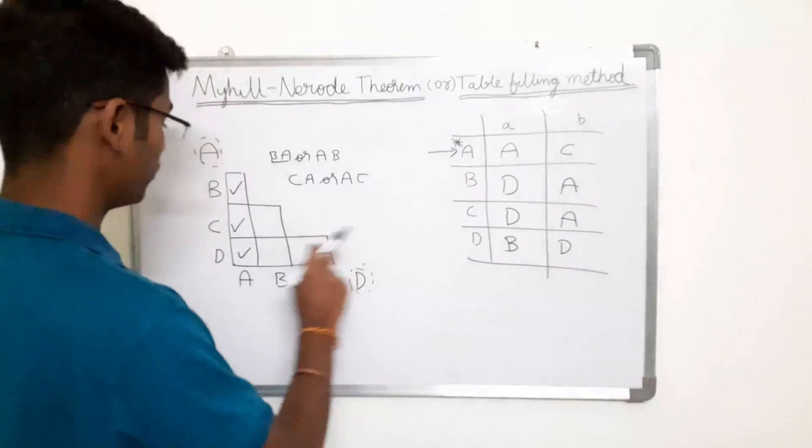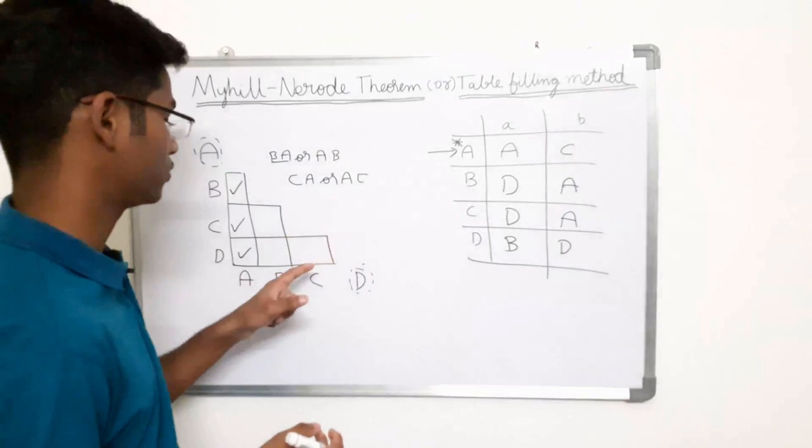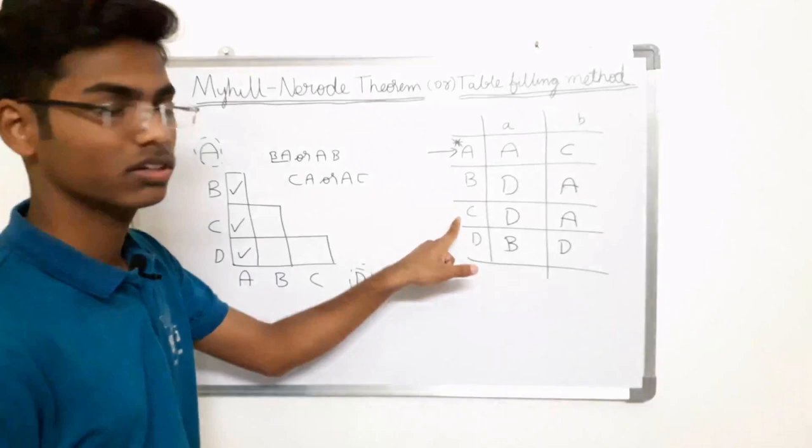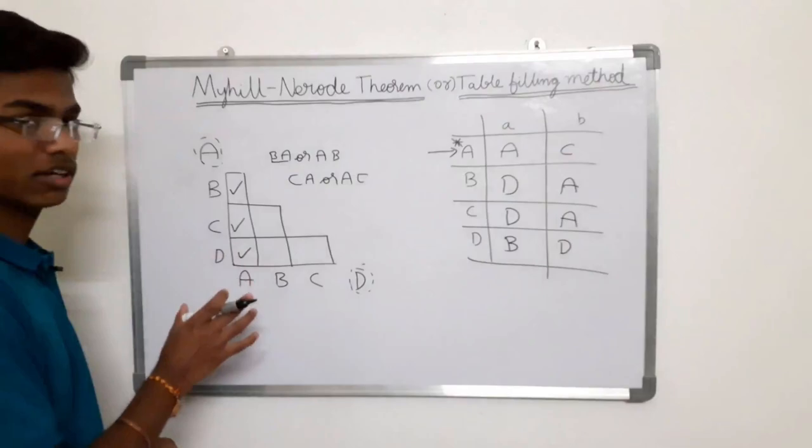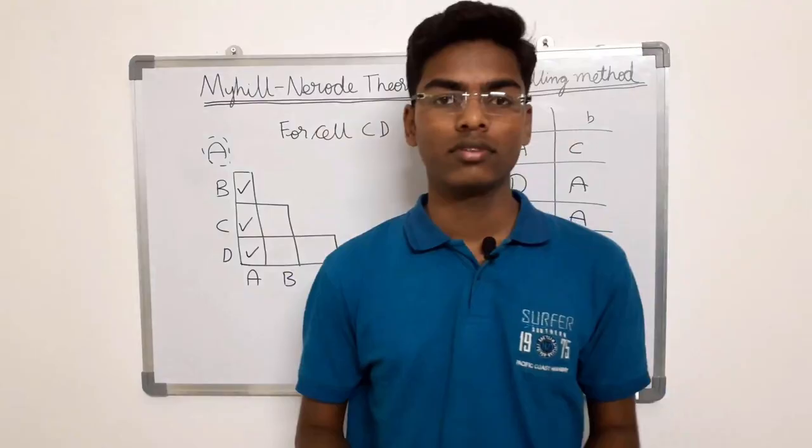For D,B — D does not belong to the final state and B also does not, so leave it. For D,C — D does not belong to the final state and C also does not, so leave it as well. After step two, the marked cells are B,A and C,A and D,A, while C,B, D,B, and D,C remain unmarked.